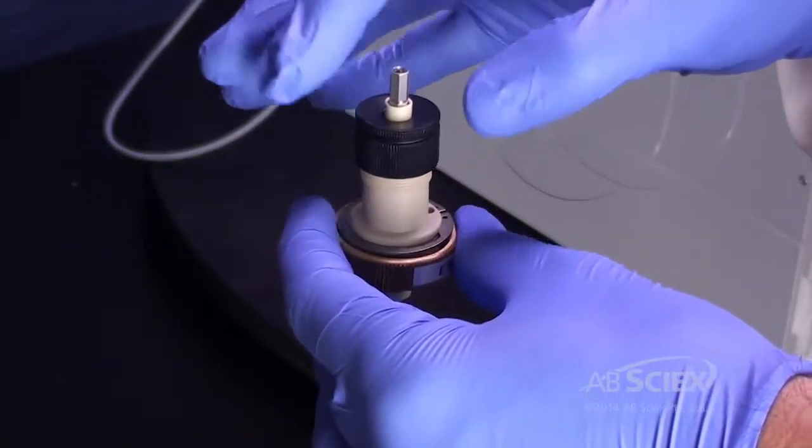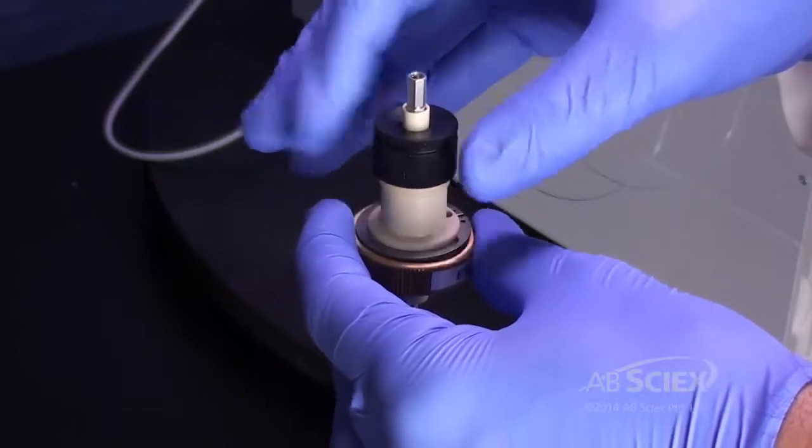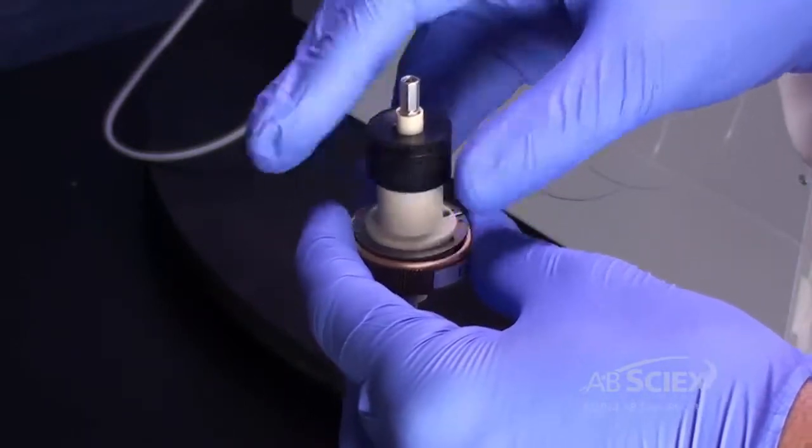Screw the cap only a few turns so as not to expose the electrode to prevent damaging the electrode tip whilst reinstalling the probe.